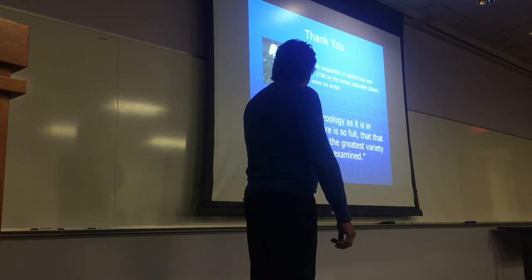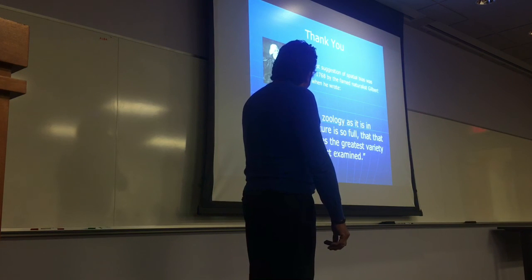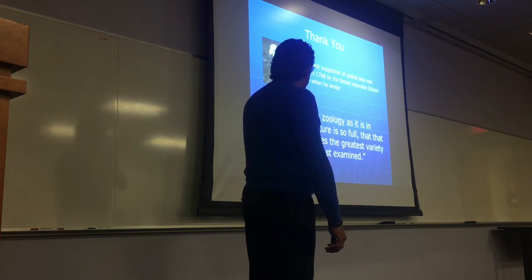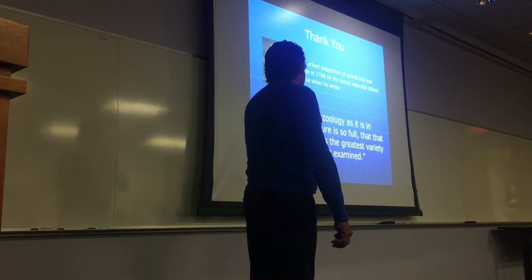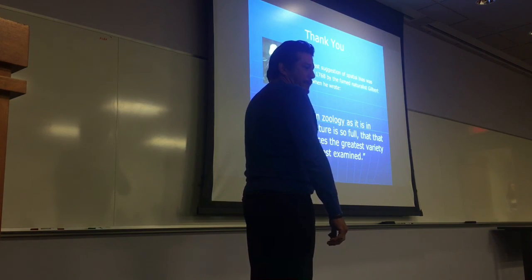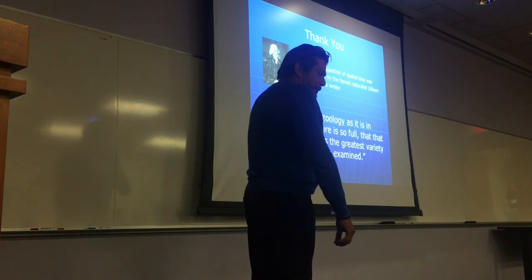I'll end on this note. This is a quote I really like. This is an early suggestion of spatial bias, made in 1768 by this naturalist Gilbert White, when he wrote, it is, I find the zoology as it is in the botany of all nature, so full that the district produces the greatest variety, which is the most examined, which basically suggests that he understood the botanist's effect about 200 years before the rest of us even put it down to paper. Thank you very much.